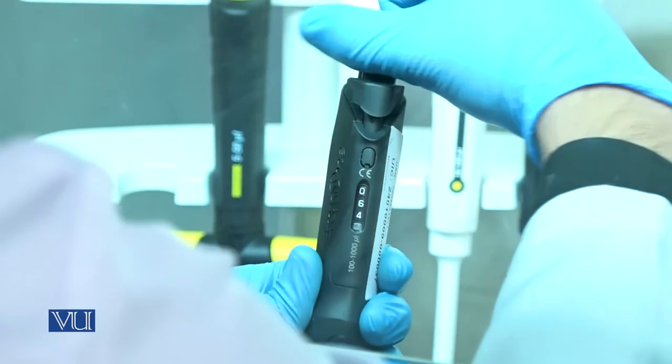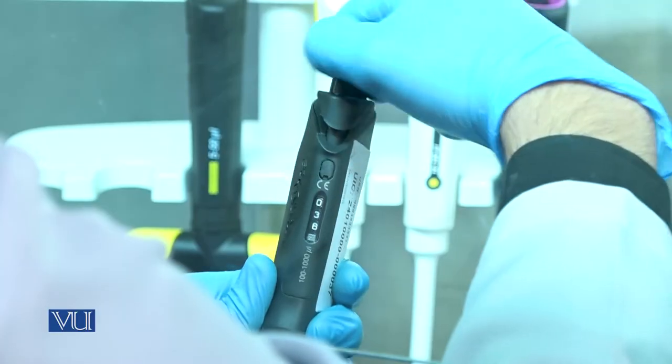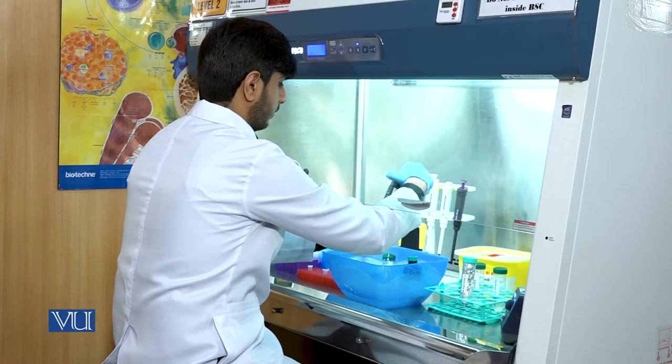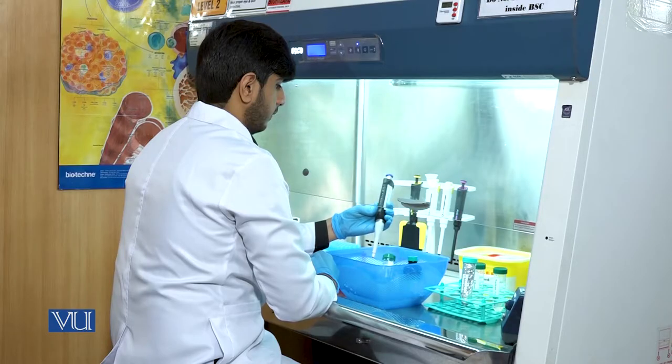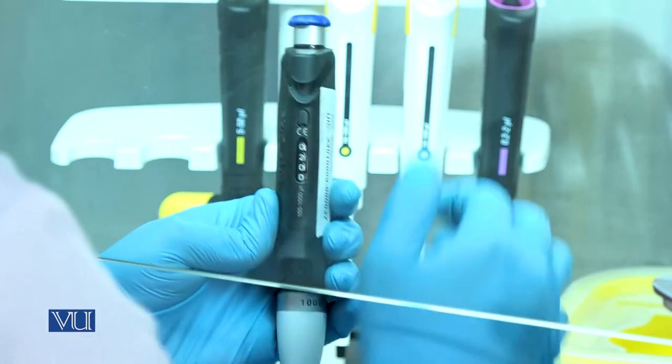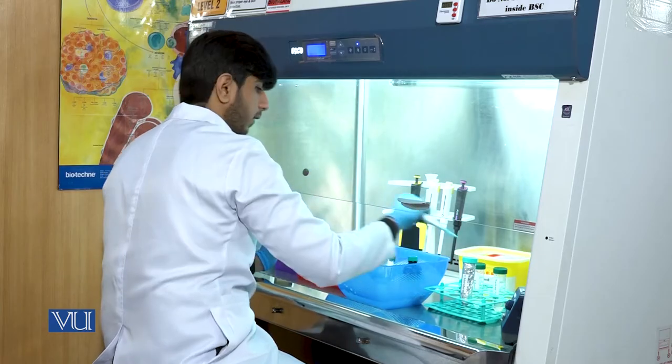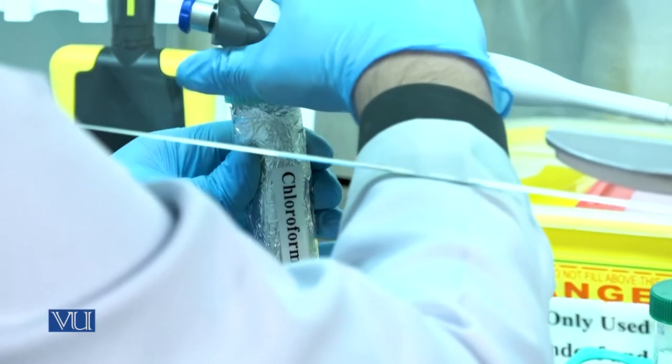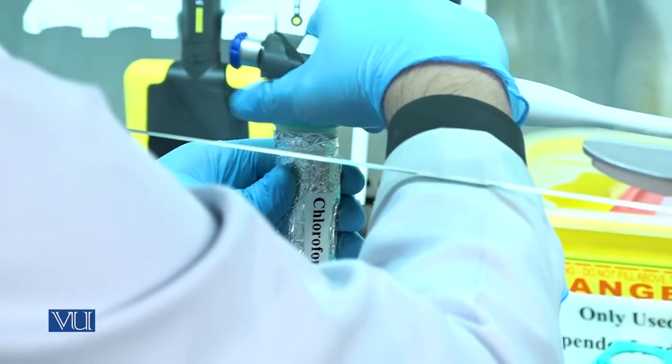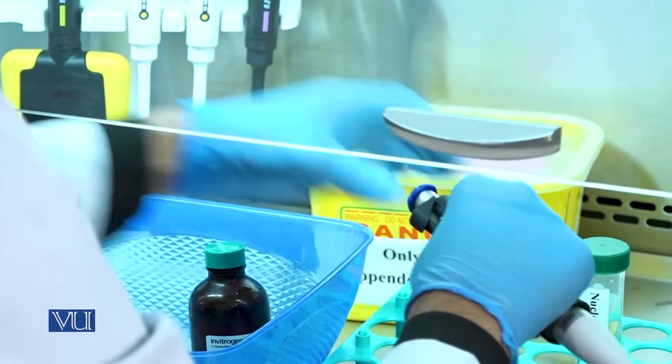Next, 200 microliter of chloroform will be taken and added in the eppendorf tube. The role of chloroform is to separate the RNA from other cell contents and proteins.